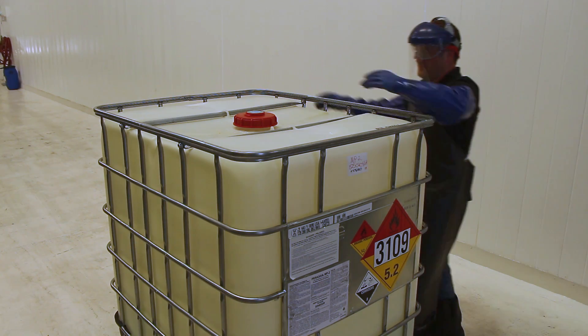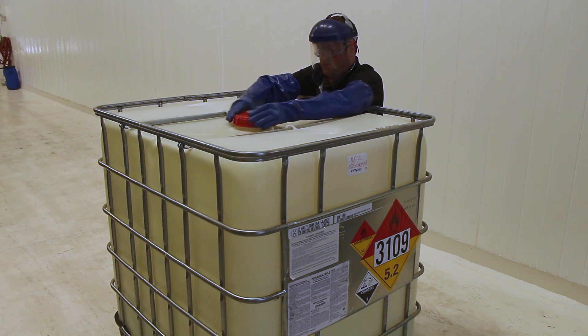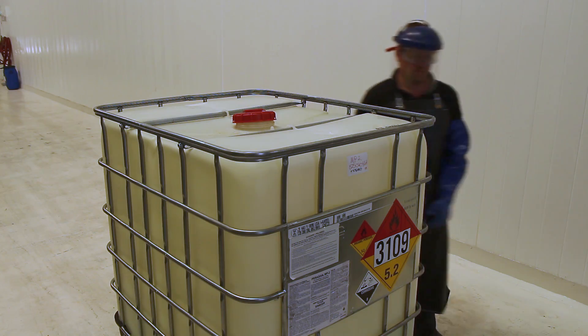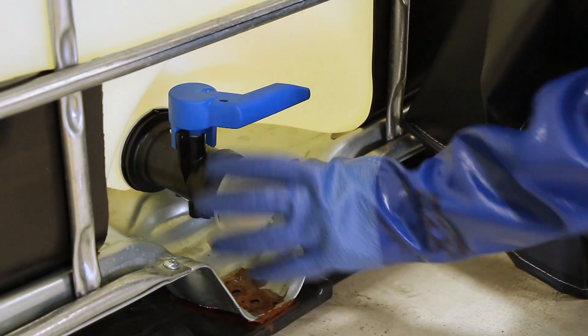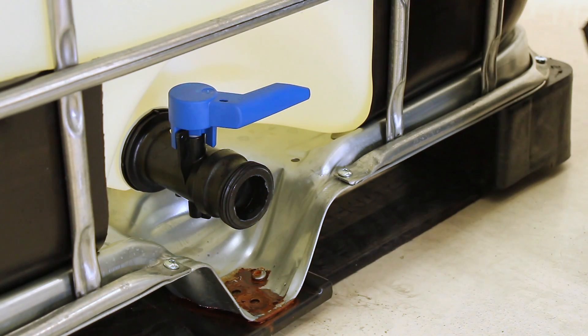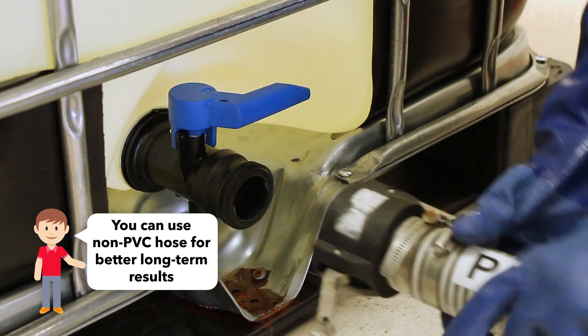If the product is being transferred from a bulk container such as a tote, the first step is to vent the top of the tote to prevent collapse due to vacuum. Make sure the opening remains covered though and that nothing falls in. The attachment of the hose is then the same as previously demonstrated.